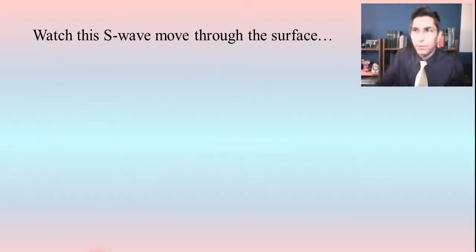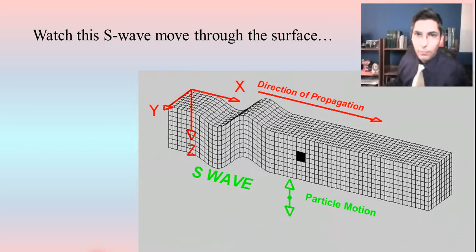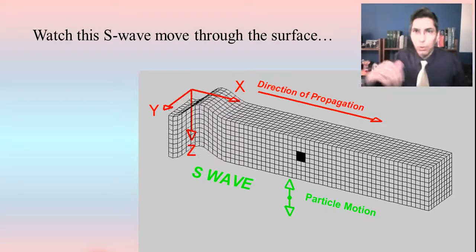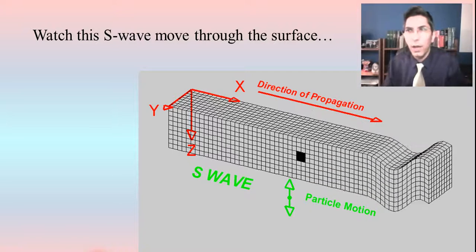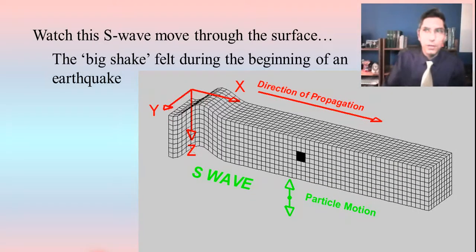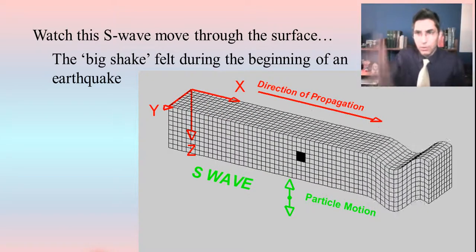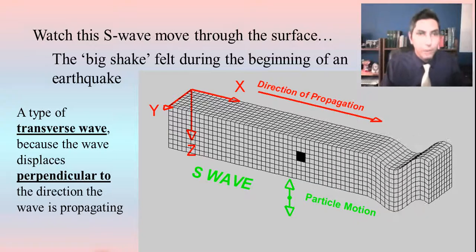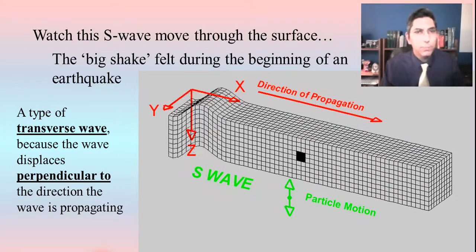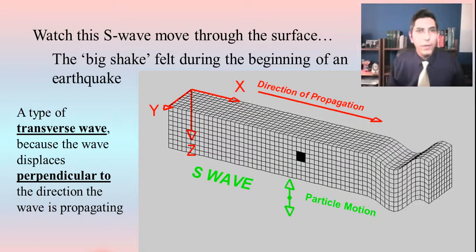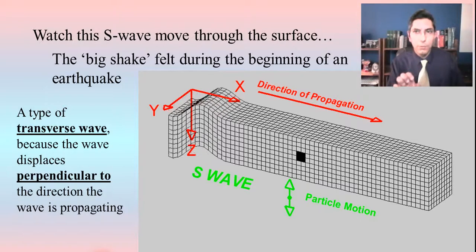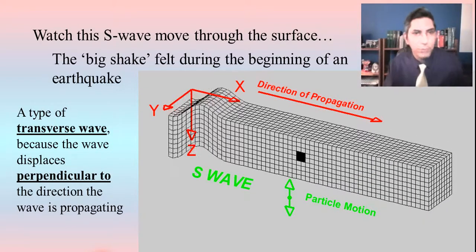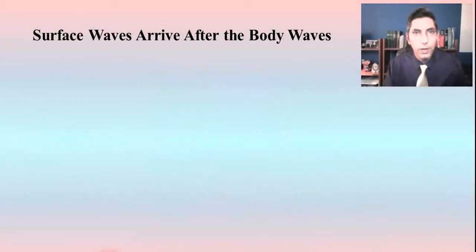S waves are different. Here's what an S wave looks like — this rolling type of movement is probably what you think of when you think of an earthquake, and it's usually what causes the big shaking you feel. It's like taking a slinky and jostling it up and down — that shaking gets transmitted through. We call this a transverse wave because the wave displaces perpendicular to the direction the wave is propagating. To create a transverse wave on a slinky, you don't push it — you move it up and down, and that wave travels along the slinky perpendicular to the motion.